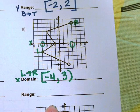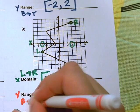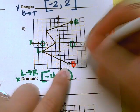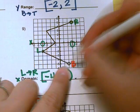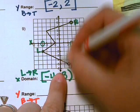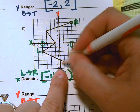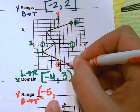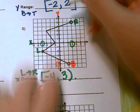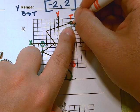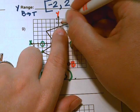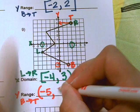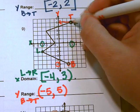The range is the y-axis, from the bottom to the top. The lowest point has a y-value of negative 5 — we use a parenthesis because it's an open circle. The top point has a y-value of 5 — we also use a parenthesis because it's an open circle.